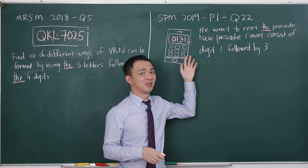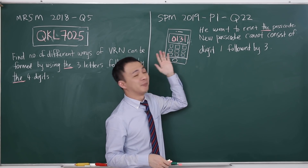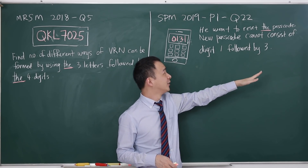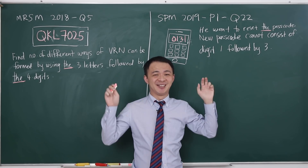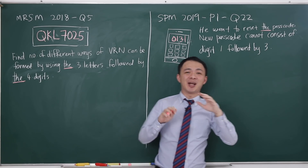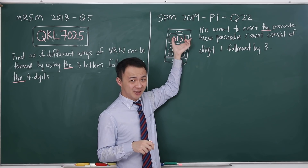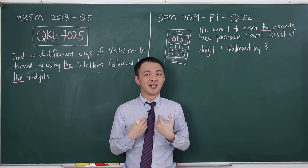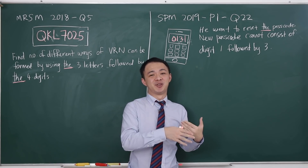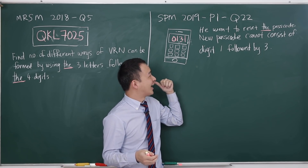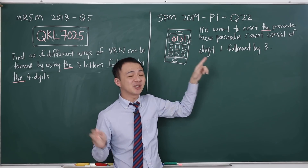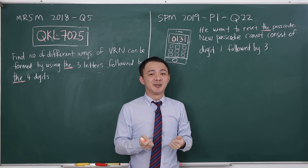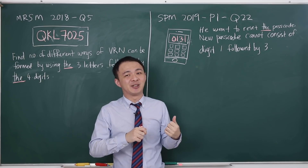The question tells you that a phone passcode is 0131, and the person wants to reset the passcode such that the new passcode cannot consist of digit 1 followed by digit 3. I feel like I'm teaching an English class here, because I'm thinking maybe they only want to use these four digits and rearrange them. In order to find out the answer, I did some research.